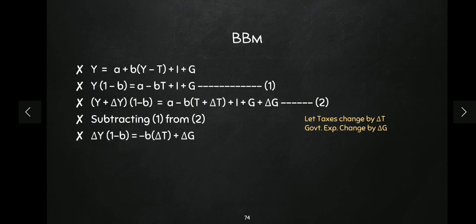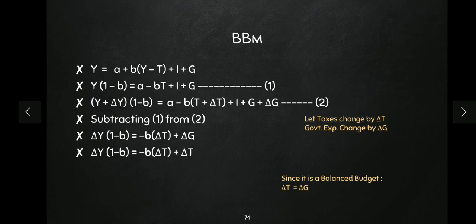So what we are left with is: delta Y multiplied by (1 - b) is equal to minus b·delta T + delta G. Now keep in mind this is a balanced budget, which means delta T is equal to delta G — change in taxes equals change in government expenditure. So we can replace these terms: either replace delta G with delta T, or delta T with delta G — it remains the same. Here I have replaced delta G with delta T.